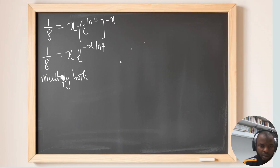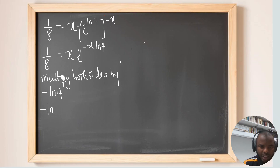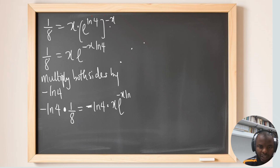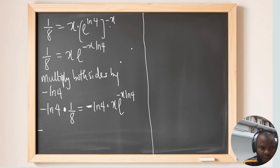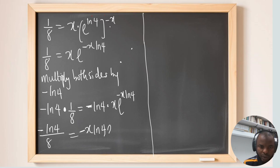Now multiply both sides by negative natural log of 4. On the left-hand side we get negative ln(4) times 1 over 8. On the right-hand side we have negative ln(4) times x times e to the power of negative x · ln(4). This gives us negative ln(4) over 8 equals negative x · ln(4) times e to the power of negative x · ln(4).